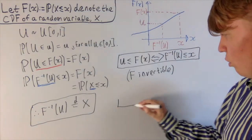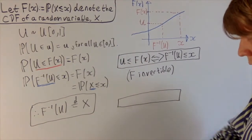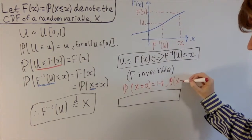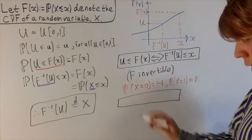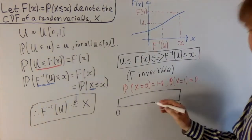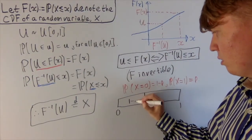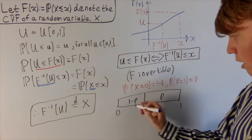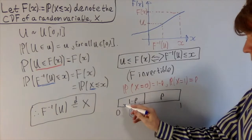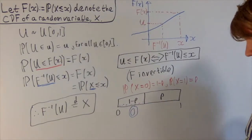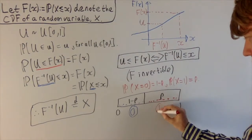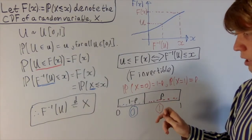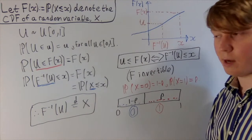Just to show pictorially what's going on: imagine you've got a uniform distribution and you want to sample from a simple example where the probability X equals 0 is 1 minus p, and the probability X equals 1 is p. All you need to do is take this interval between 0 and 1, take a random sample from the uniform distribution, and split your interval into a region of size 1 minus p and a region of size p. Values falling in the first region you turn into zeros, and values in the second region you turn into ones using the inverse of the CDF. When you apply this transformation, you can turn sampling from the uniform distribution into sampling from any distribution you like.